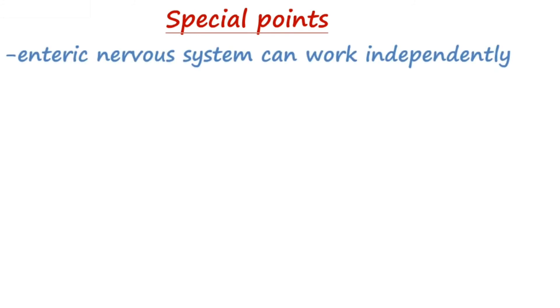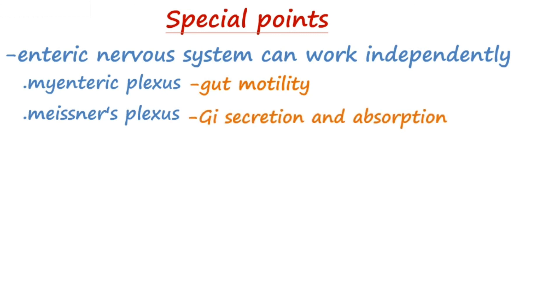So overall, some points of attention include: first, enteric nervous system can work independently and it consists of myenteric and Meissner's plexus. Second, myenteric controls gut motility and Meissner's controls GI secretion and absorption. Third, pacemaker cells initiate depolarization in interstitial cells of Cajal.